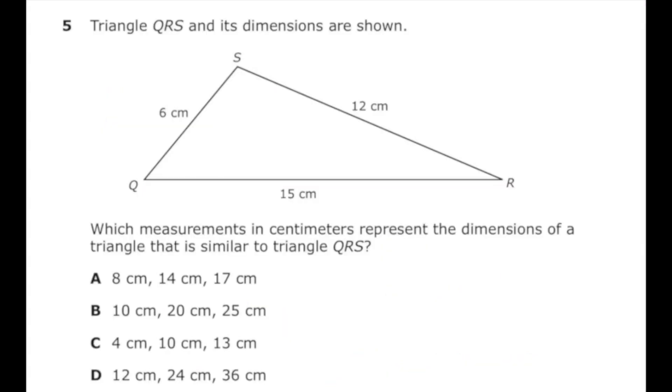Number 5 from the 2022 7th grade math STAR test. Triangle QRS and its dimensions are shown. Which measurements in centimeters represent the dimensions of a triangle that is similar to triangle QRS? In other words, we need a triangle that is proportional to the triangle they're showing.